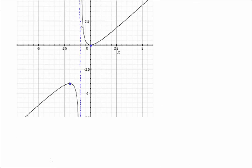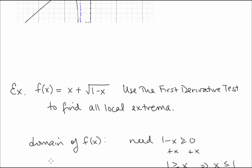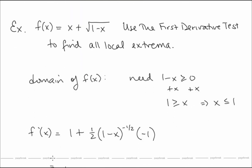Now let's look at f(x) = x + √(1 - x). Use the first derivative test to find all local extrema. Step 1: Because we have a square root, we need 1 - x ≥ 0, so x ≤ 1. This is our domain — no discontinuities, but a restricted domain.